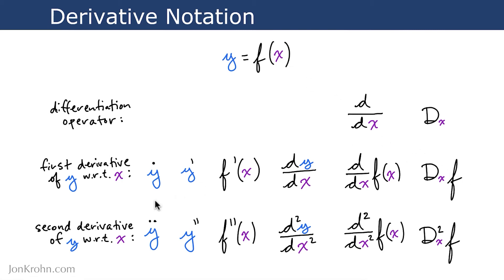Second derivatives follow along directly from the first derivatives. So if we apply the differentiation operator twice to our function f(x), then we get the second derivative. So this is like going from distance over time to speed over time, and then to acceleration over time with the second derivative.